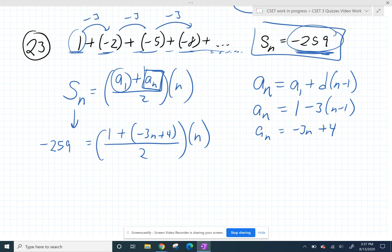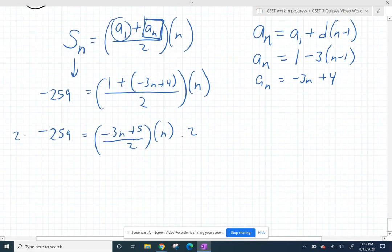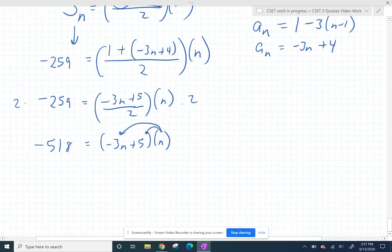Let's see what happens. I'm going to clean up the top just a little bit. So that's negative 3n plus 5 over 2 times n. And I don't particularly like that fraction, that dividing by 2. So I'm going to multiply both sides by 2 to get rid of it with fraction busting. So negative 518 is going to be equal to negative 3n plus 5 times n. Then I'm just going to distribute the n. So negative 518 equals negative 3n squared plus 5n.